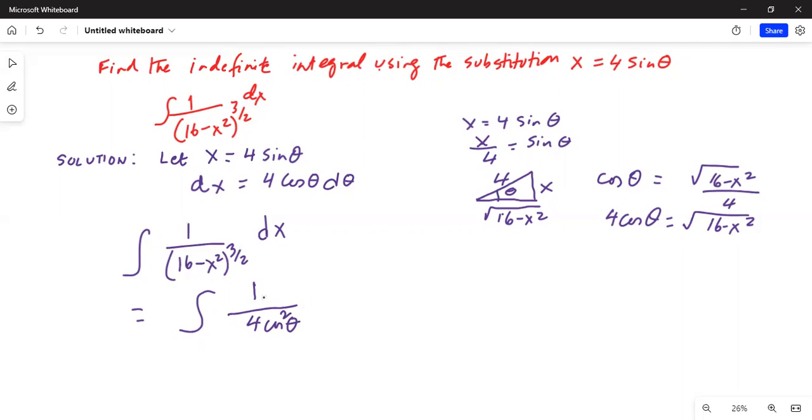Actually, 4 square cosine square theta is equal to 16 minus x square. So for 16 minus x square, I'm substituting 4 square cosine square theta and then this whole thing is raised to the power of 3 by 2.